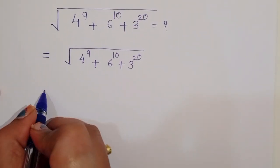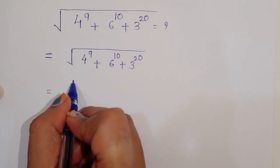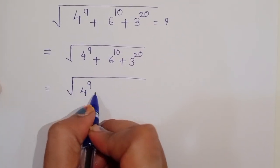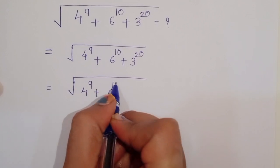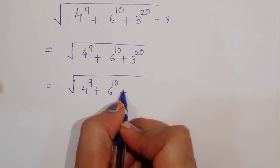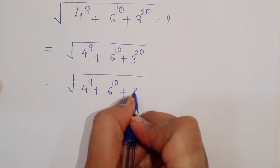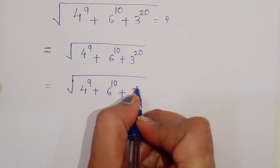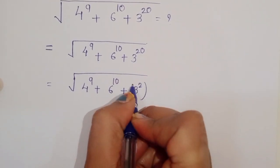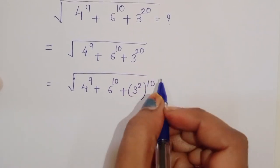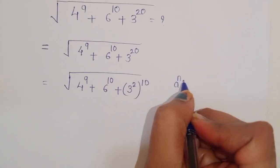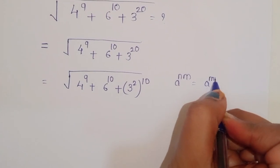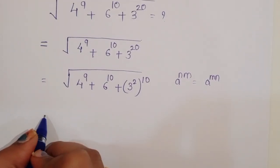In the next step, we rewrite 3 power 20 as 3 power 2 power 10, using the rule that a power nm is equal to a power mn.